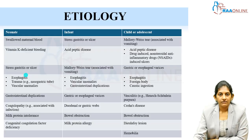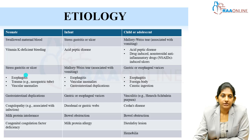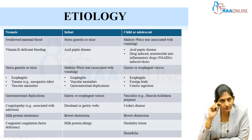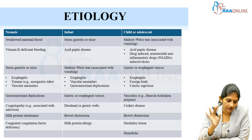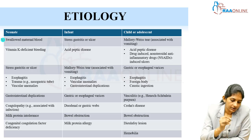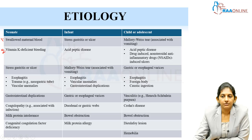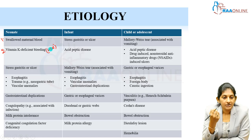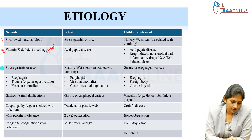The etiology will depend on the age of the child — it will be different for a neonate, for an infant, and for a child or adolescent. In a neonate with hematemesis, first rule out two important things: swallowed maternal blood, and vitamin K deficient bleeding, that is hemorrhagic disease of the newborn. Then consider stress gastritis or ulcer.